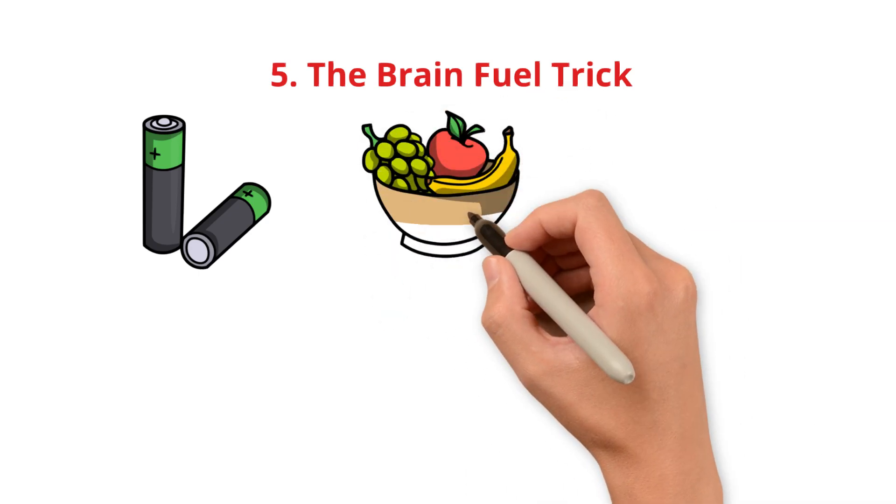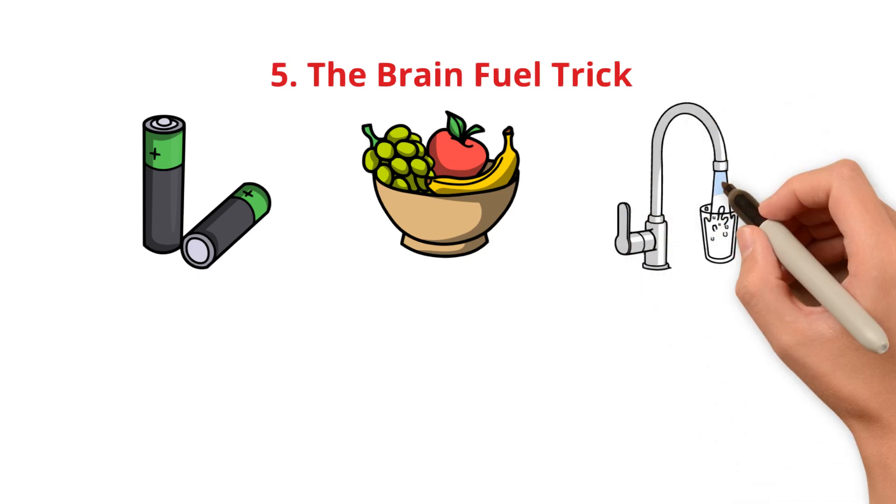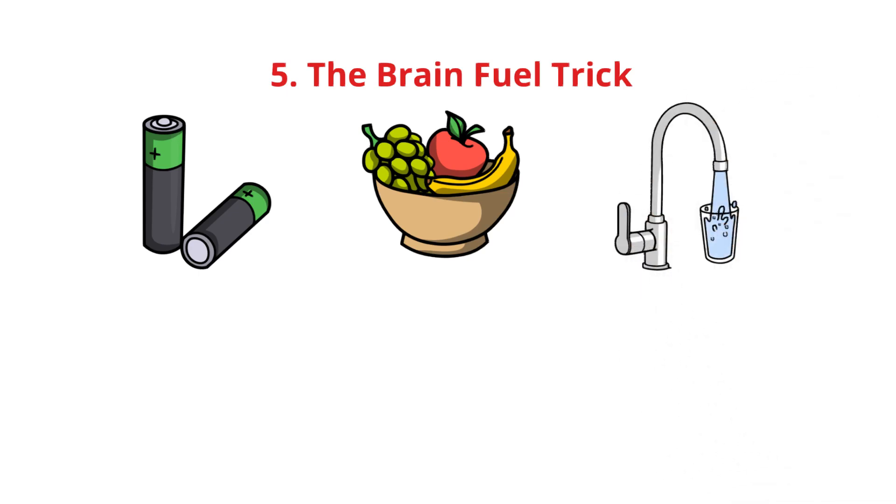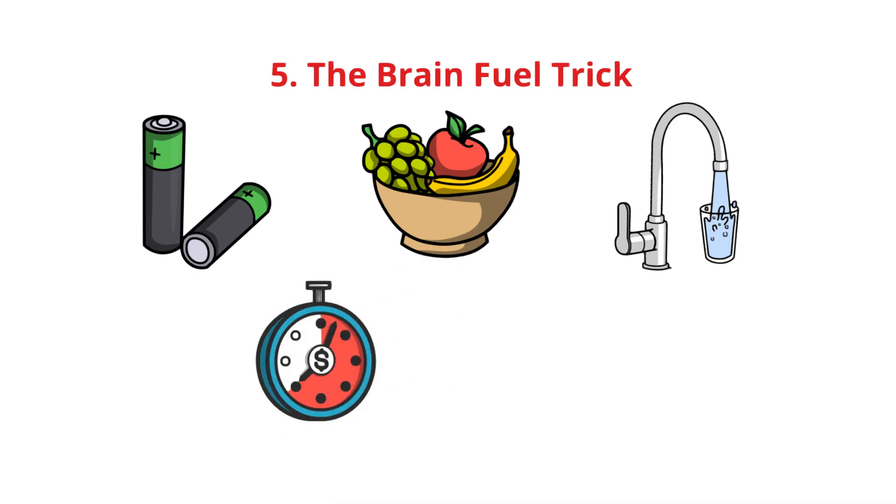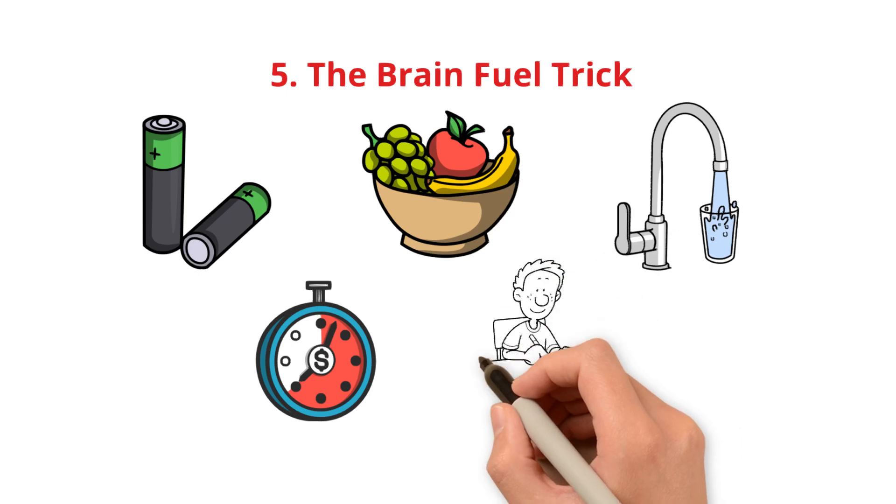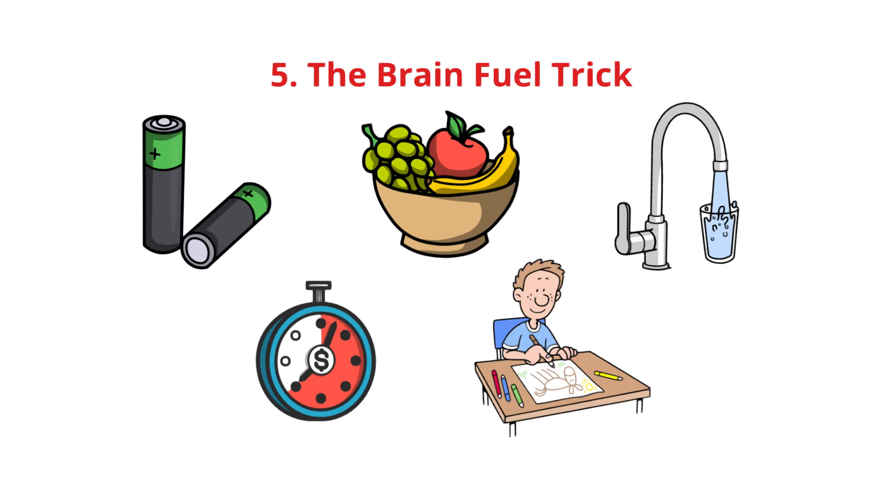Eat brain foods. Nuts, dark chocolate, eggs and blueberries boost focus. Drink water. Even 1% dehydration reduces memory and focus. Use the 2-minute movement rule. Stand up, stretch, or walk every 30 minutes to reset your brain. When you give your brain the right fuel, studying feels effortless. But what if your focus still fades after an hour? Tip 6 is the game changer.